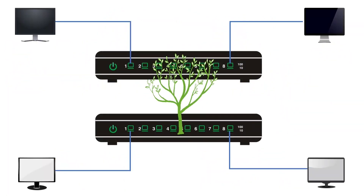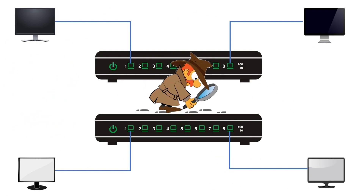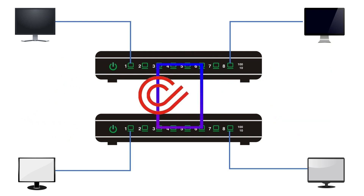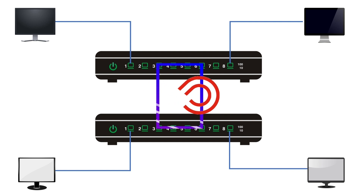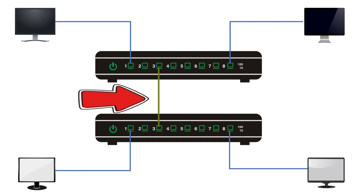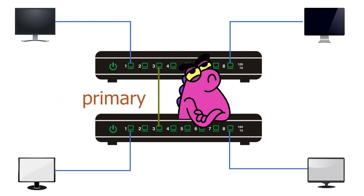Spanning Tree Protocol is a Layer 2 protocol. It finds and removes switching loops from the network. A switching loop occurs when two switches have more than one direct connection. If you connect two switches with a single link, the link is called the primary link. A primary link does not create a switching loop.